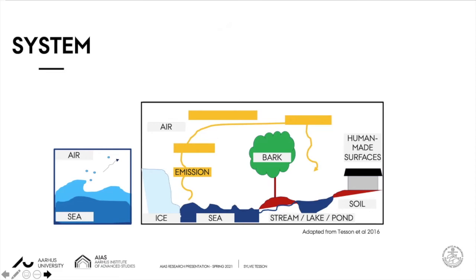Once in the atmosphere, they will start to diffuse and then progressively be transported over geographical scales, prior to being deposited, by, for example, precipitation, into new environments where they can proliferate.